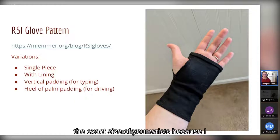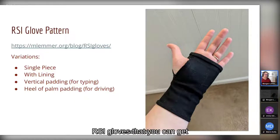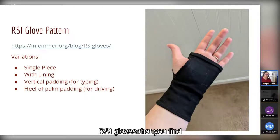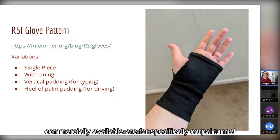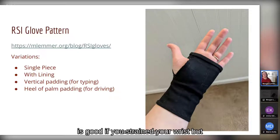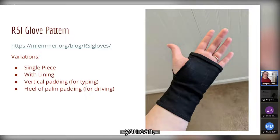With this pattern you can make gloves to the exact size of your wrists, since many commercially available RSI gloves run large. You can customize them to yourself and find the style you like, because a lot of commercial RSI gloves are specifically for carpal tunnel or have metal in them — good for a sprained wrist but not ideal for typing. You can fit it to suit your own needs.